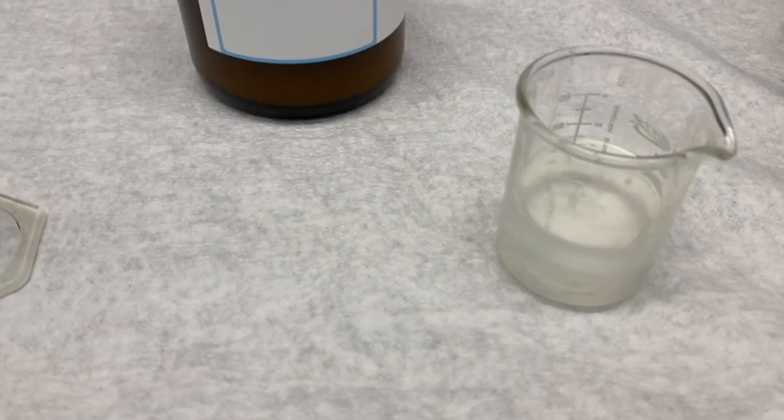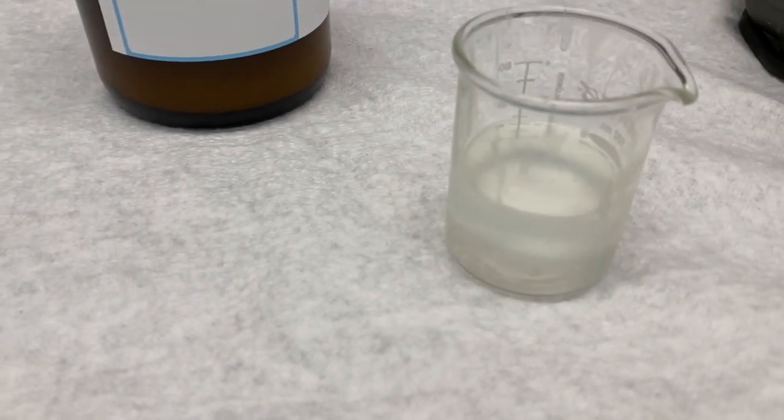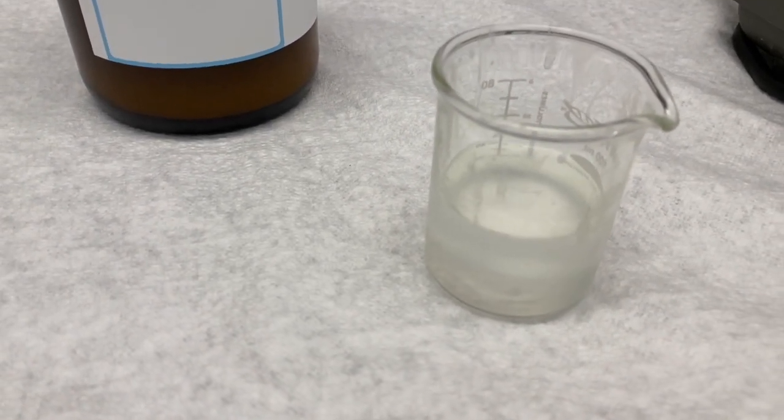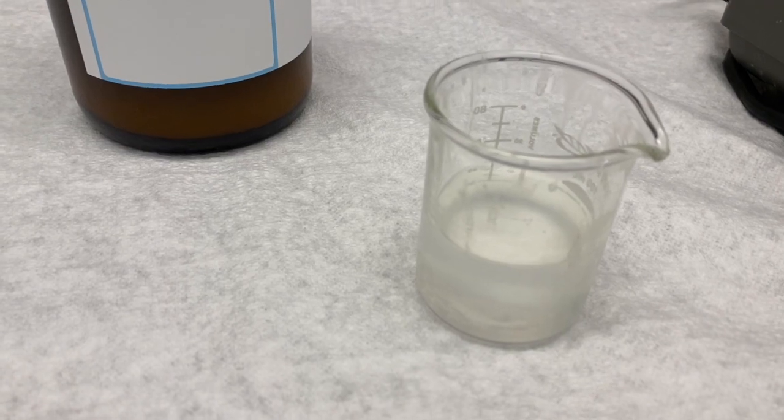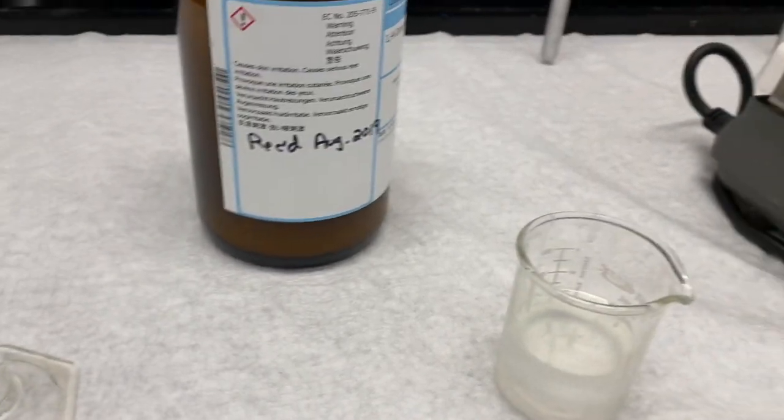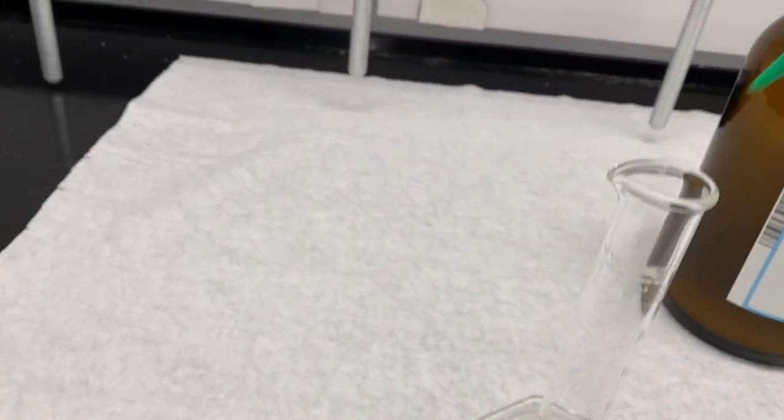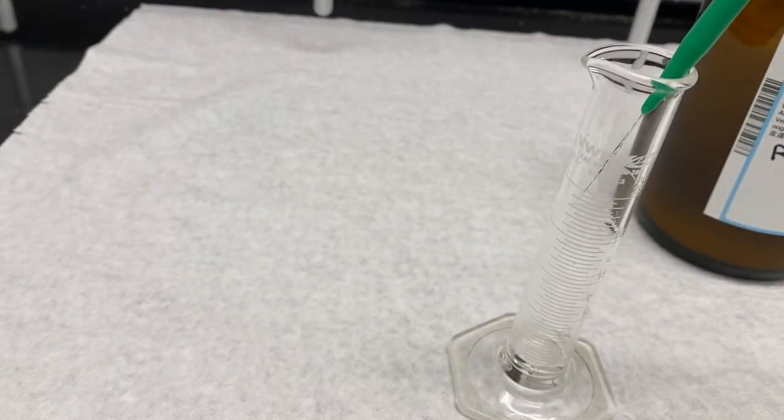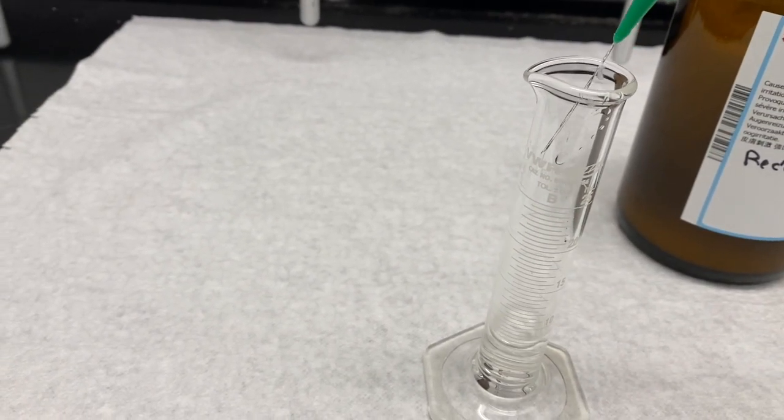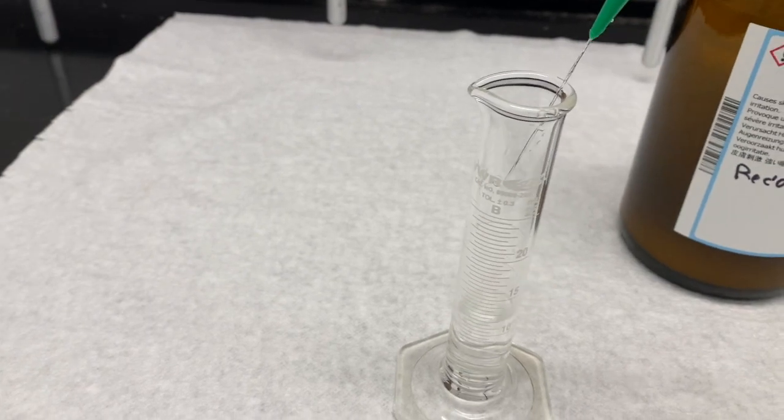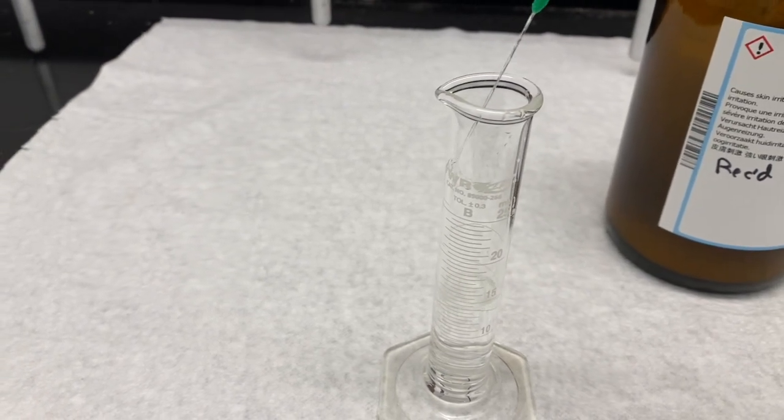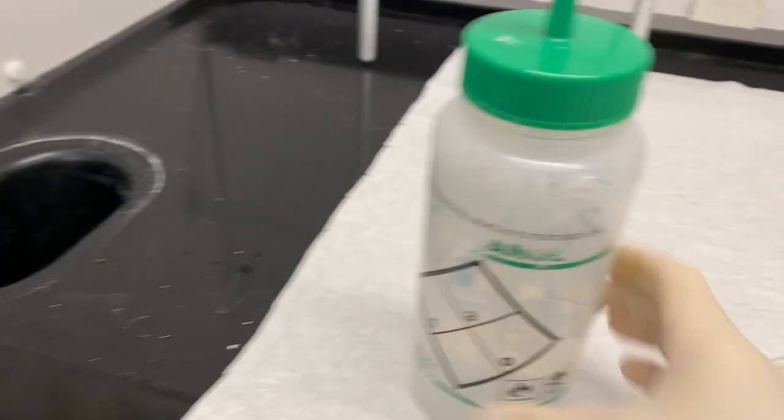So now we have our solution that has been filtered away from the drying agent. And that's sodium sulfate. And now we're ready to recrystallize. So we're going to add, this is about 15 milliliters of methanol. And our product is not going to be soluble in methanol.